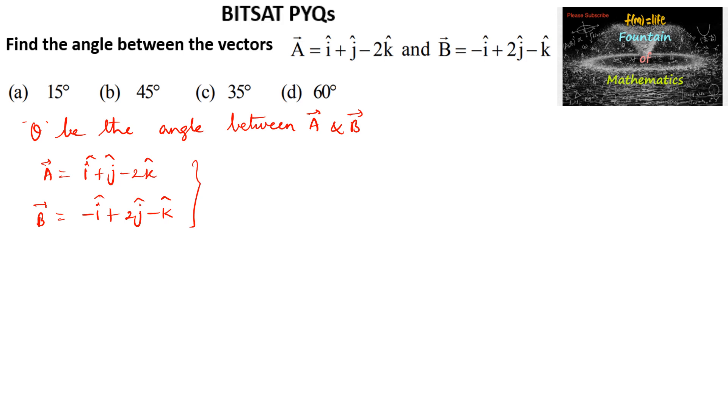Then we can write cos theta is equal to a dot b divided by mod a into mod b. Let us find a dot b which is equal to i plus j minus 2k dot product with minus i plus 2j minus k. We can add 1 into minus 1 is minus 1 plus 1 into 2 is 2 and minus 2 into minus 1 is plus 2. So we can add 2 plus 2 for 4 minus 1 is 3. So a dot b is equal to 3.